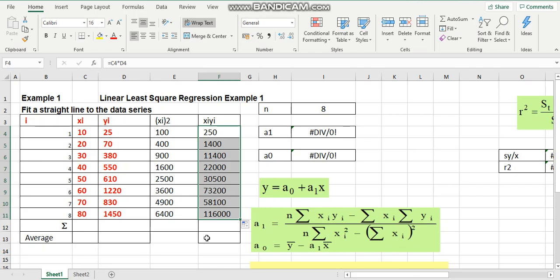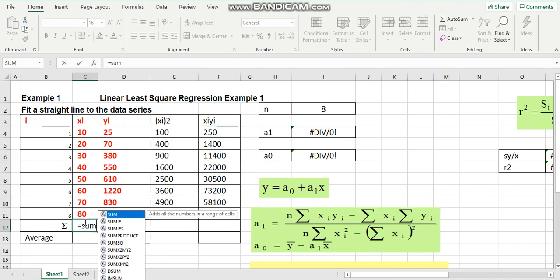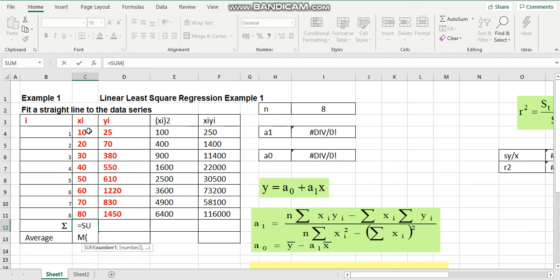Now, we will determine the summation of X, Y, X squared, and X times Y. We will record all the sums at row 12. We enter the formula sum. Then, we double click it. We choose the number starts from cell C4 until cell C11. Then, just enter. We get the result.